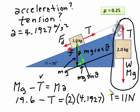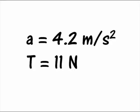When writing the final answers, I'll express them to two significant figures. So the acceleration is approximately 4.2 m/s² and the tension is 11 newtons.